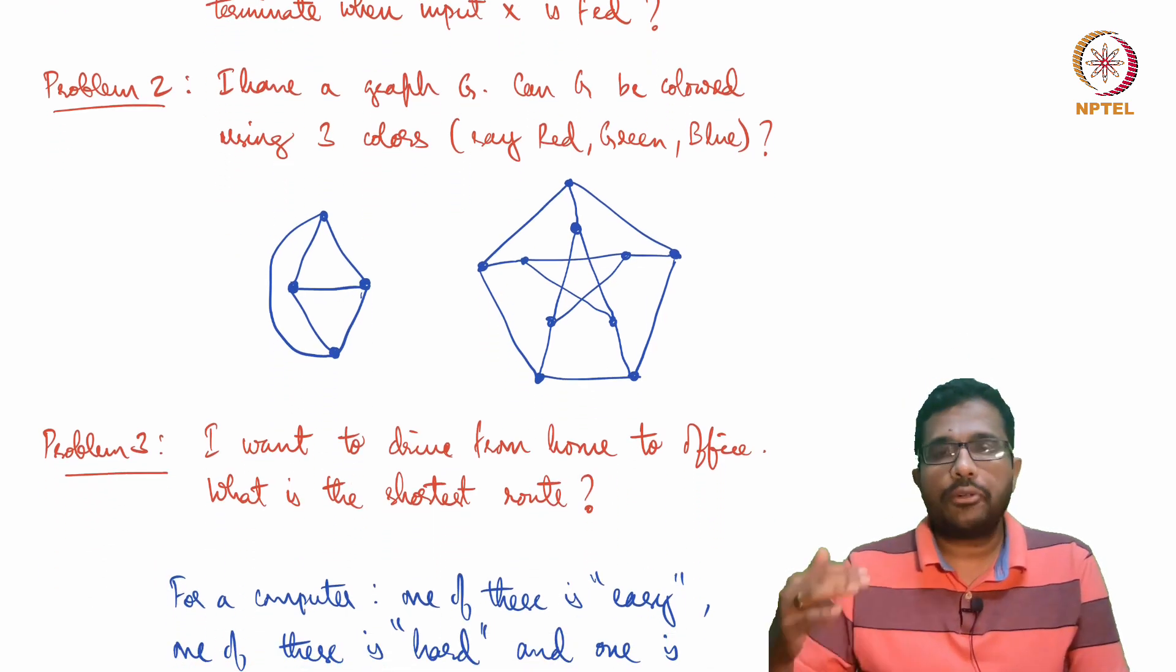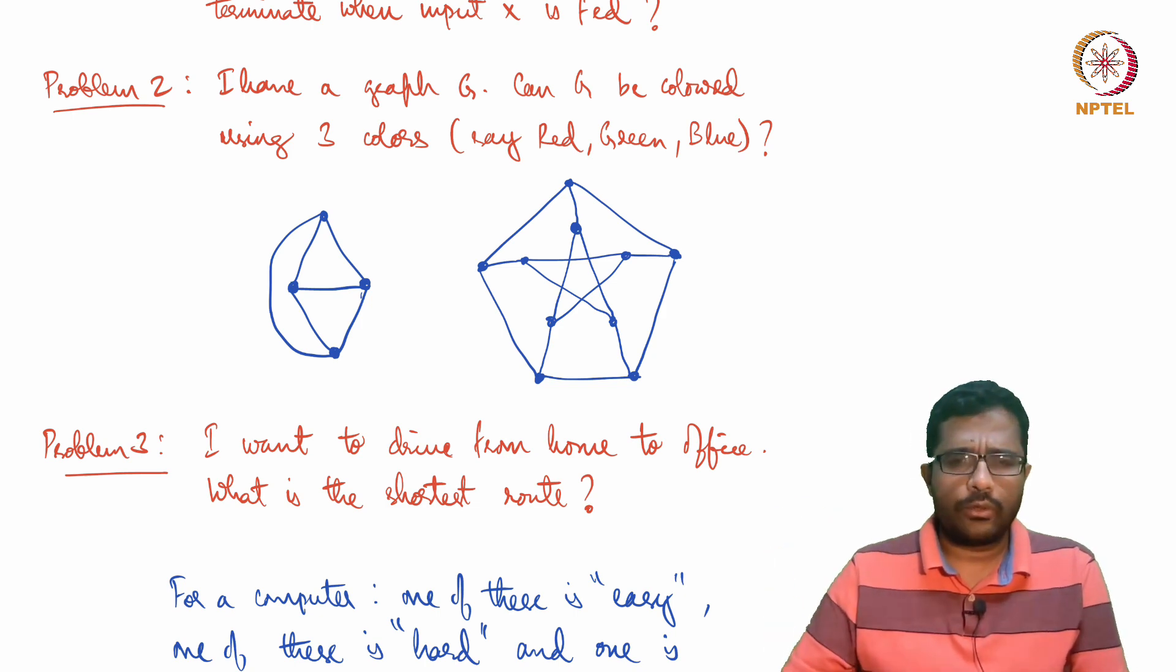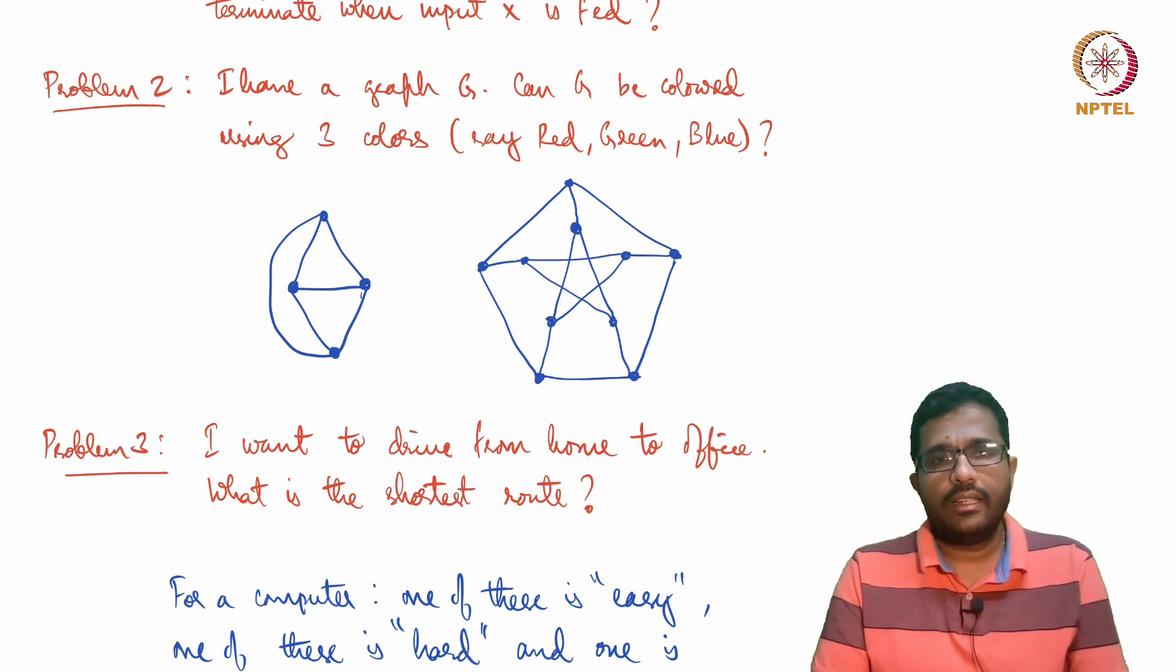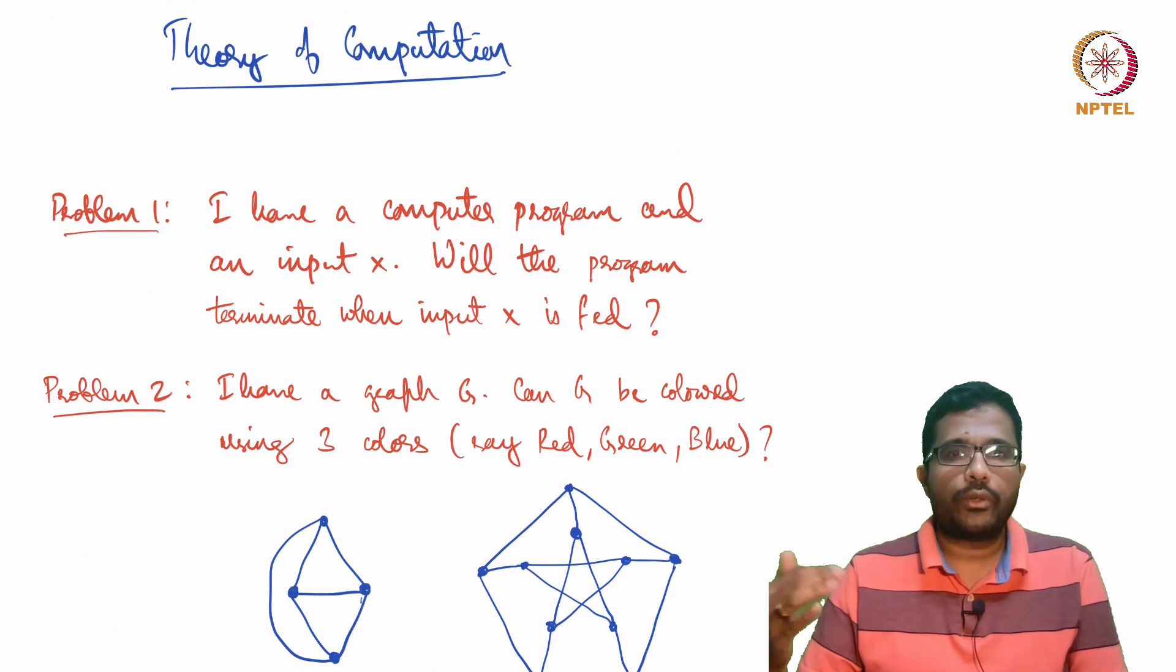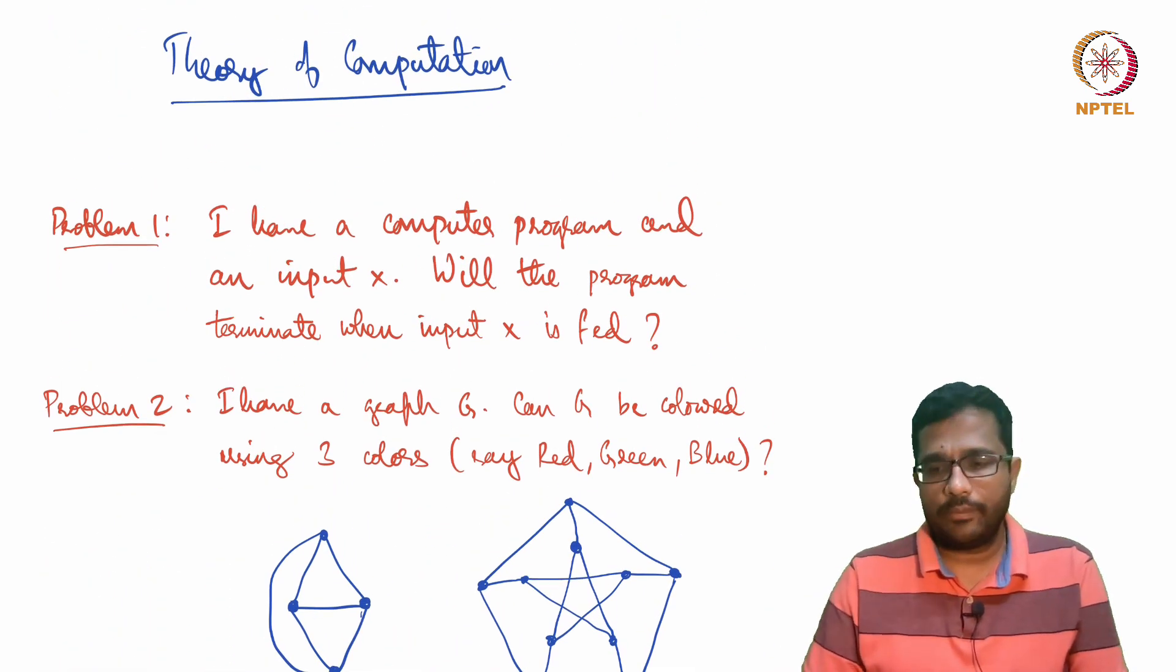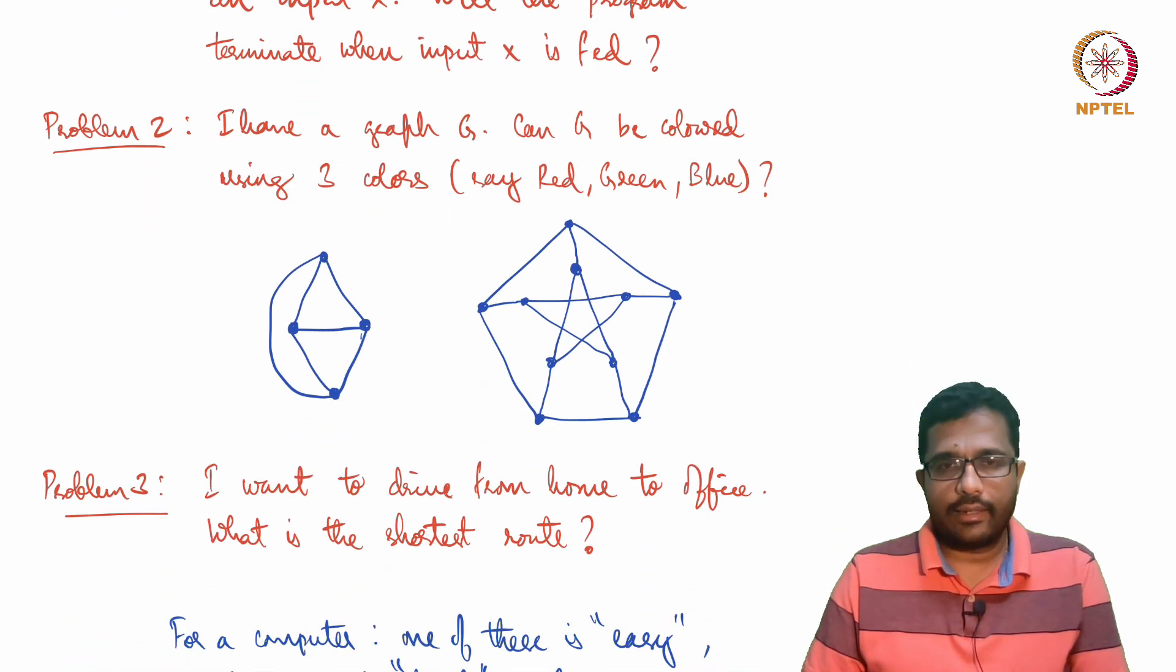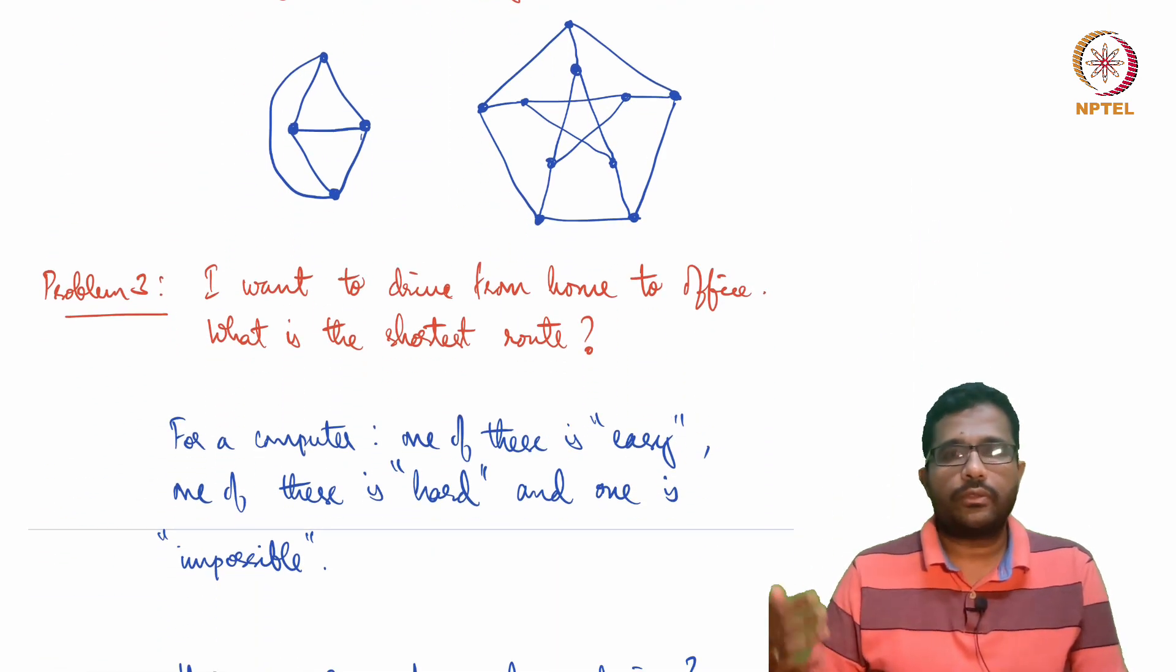Problem three: I want to drive from home to office. Which is the shortest route? Assuming I have road data, traffic data, and so on, I want to know which route will be shortest for me. These are the three computational problems: one is whether a program will terminate on an input, second is three-coloring a graph, and third is the shortest route from home to office.